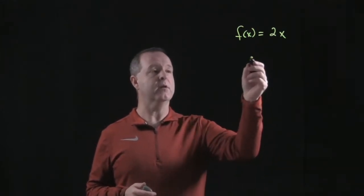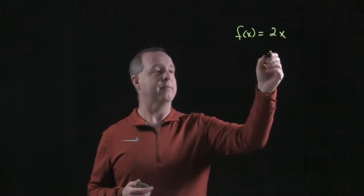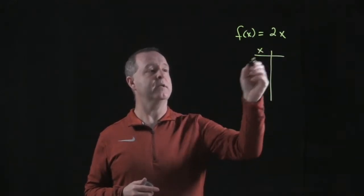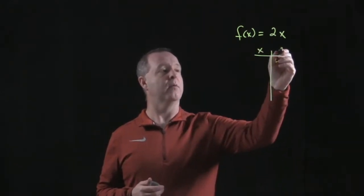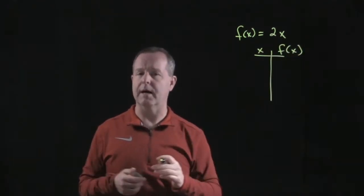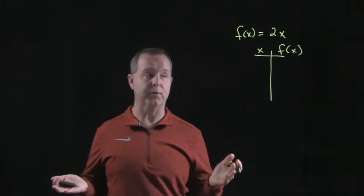Typically what we would do is we would develop some type of a table, look for some points. So let's imagine x and what its output would be as f(x). If x were, and we like to choose a couple of points when you plot, you want to choose at least three.